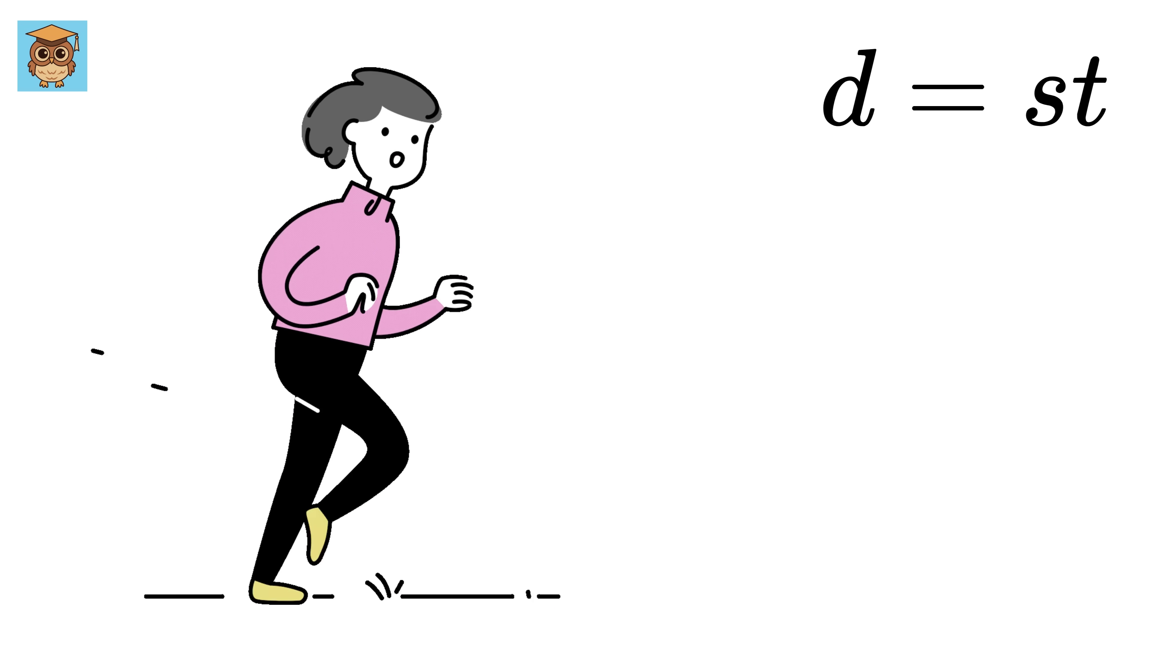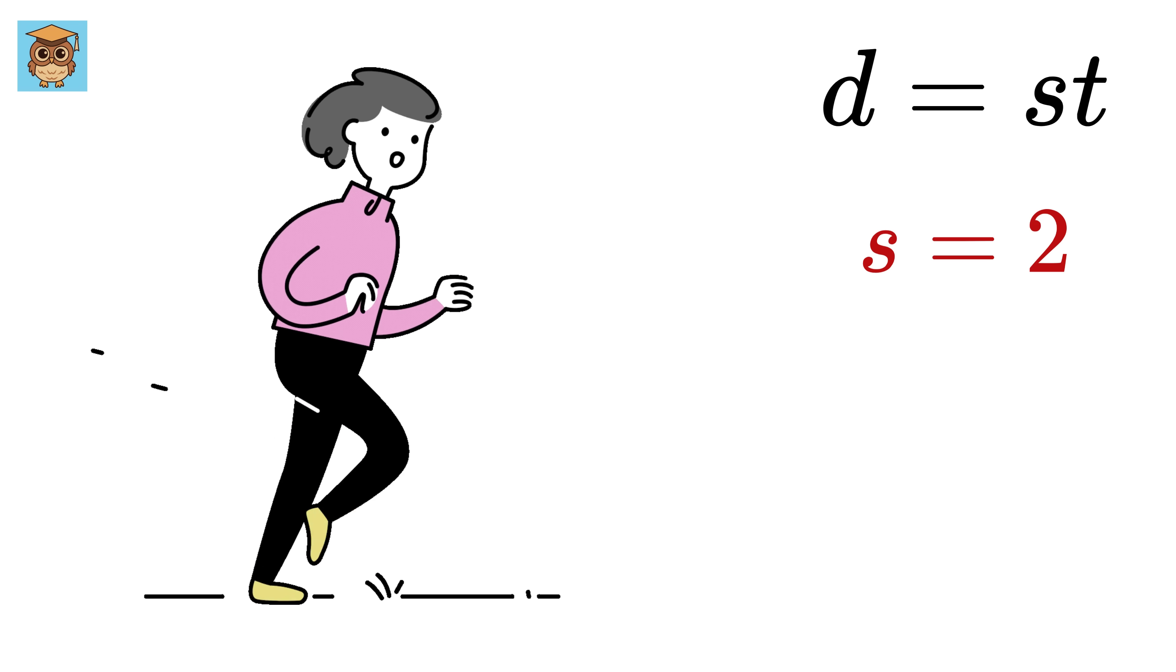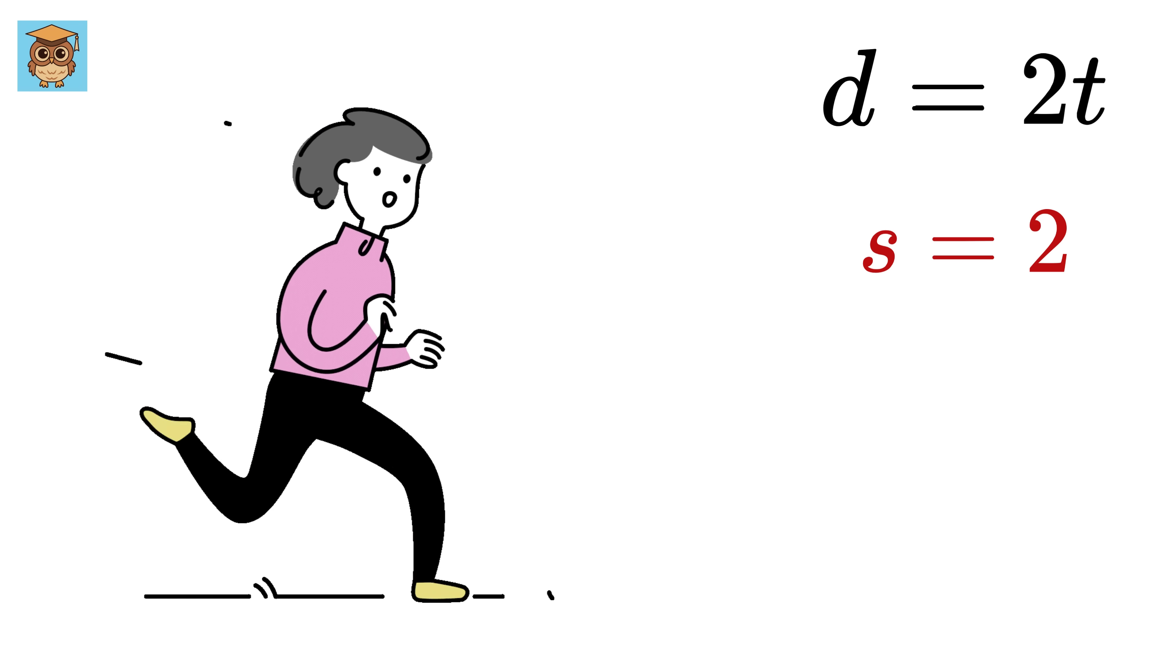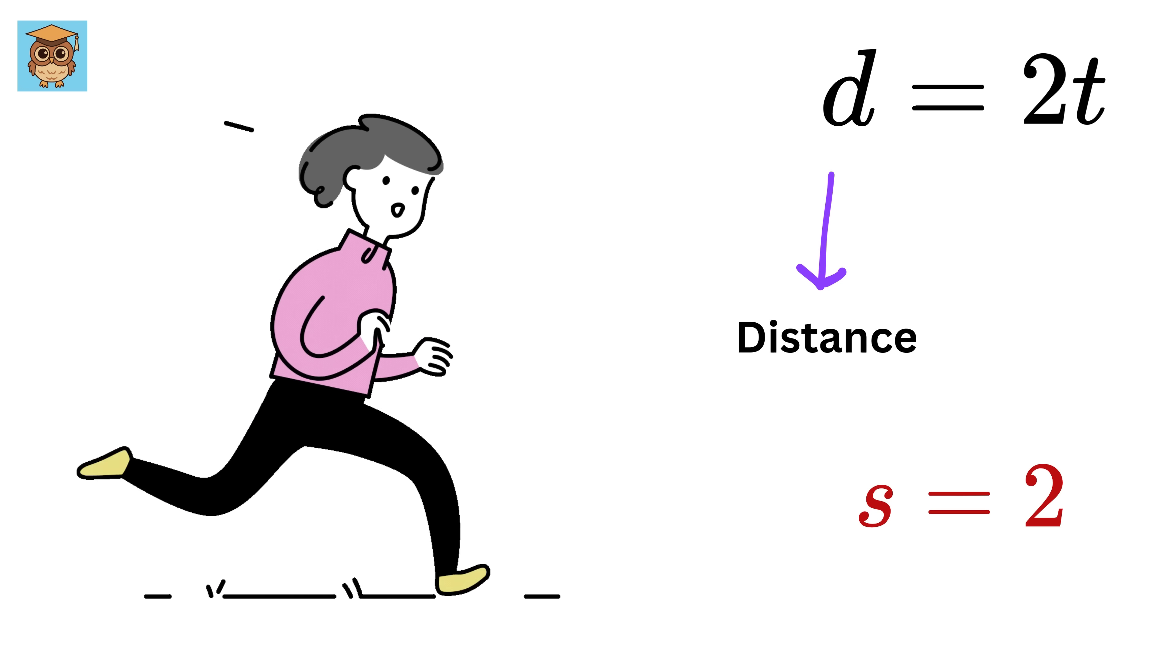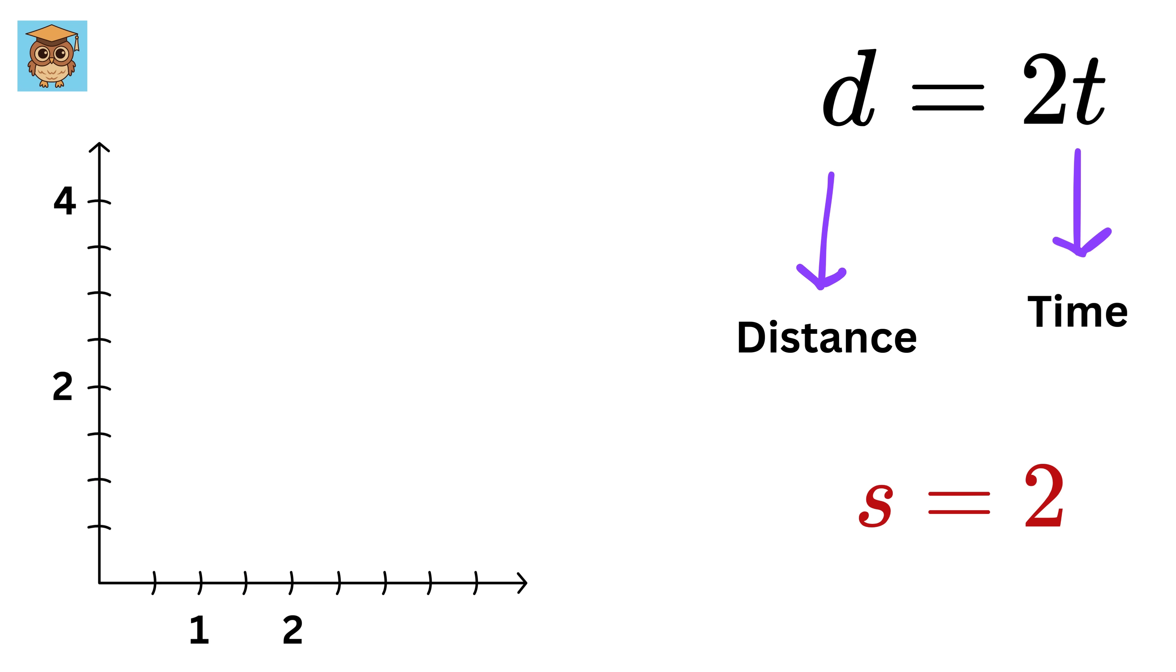Now assume you are running at a constant speed, say 2 meters per second. So d will now be equal to 2t, where d is the distance and t is the time. Now if I draw this graph, where I put time on x-axis and distance on y-axis, then we get this straight line, and the slope of this line will be the same as your constant speed of 2.